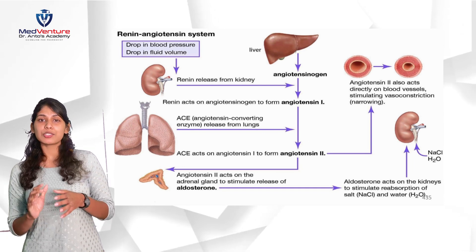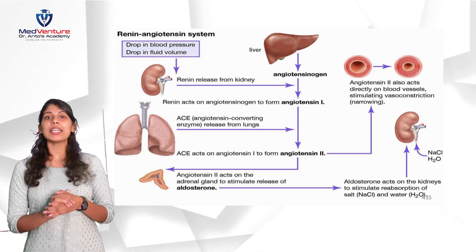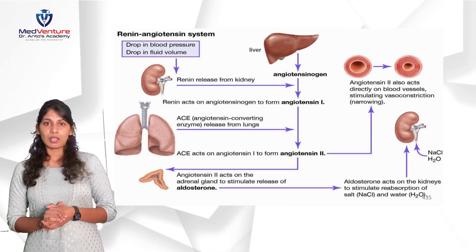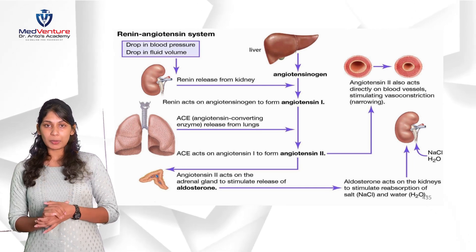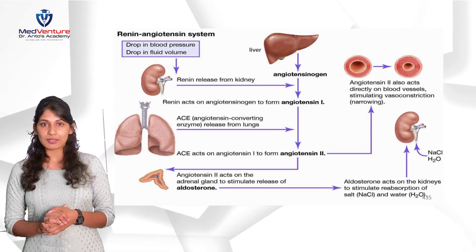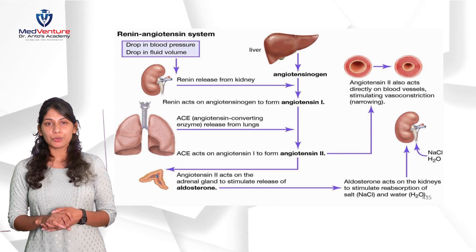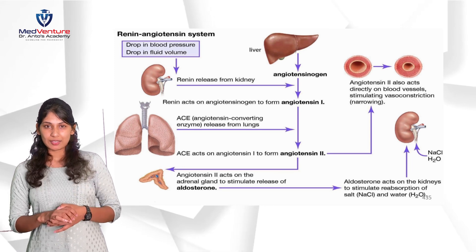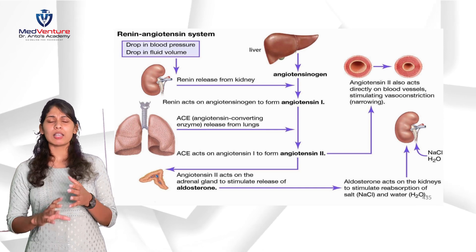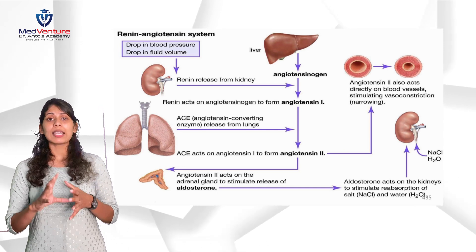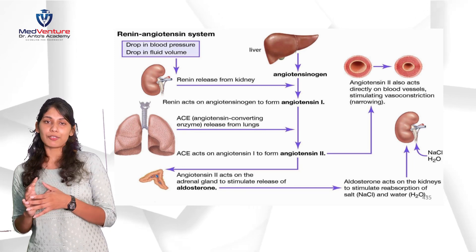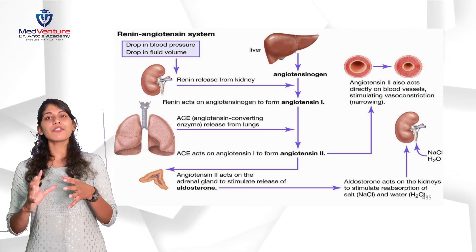ACE, or angiotensin-converting enzyme, is released from the lungs. So to maintain blood pressure, we have the kidneys, liver, and lungs involved. ACE also has a role in metabolizing bradykinin, which is involved in producing cough when an allergen enters the respiratory system.